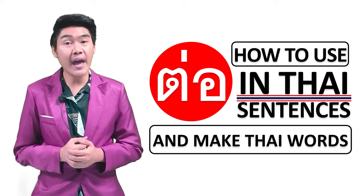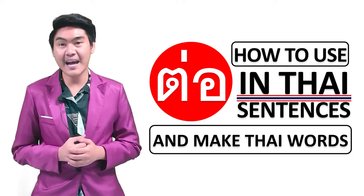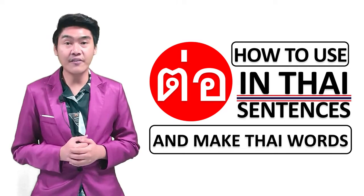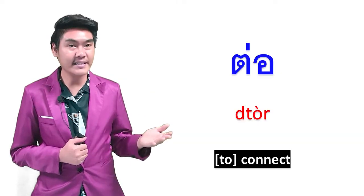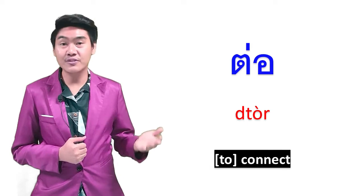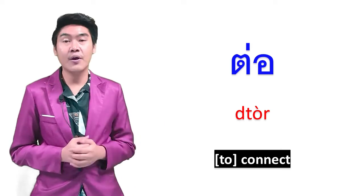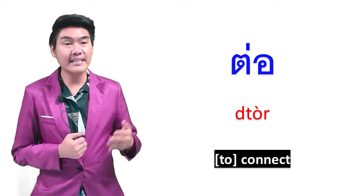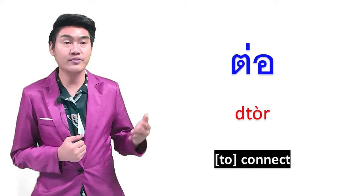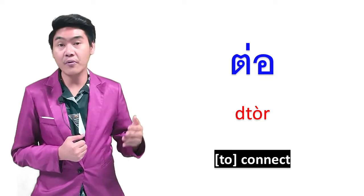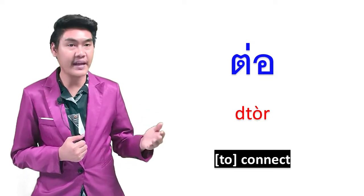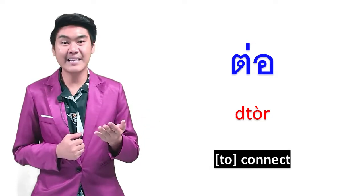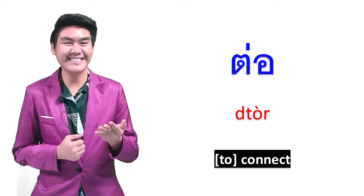Firstly, you have to know the meaning of ต่อ in the Thai language. The first Thai meaning of ต่อ is to connect. We use ต่อ in Thai sentences when we want to join together two or more things. You can learn how to use ต่อ from these example sentences.